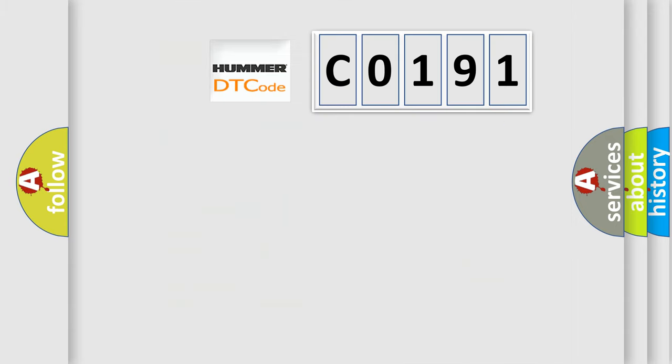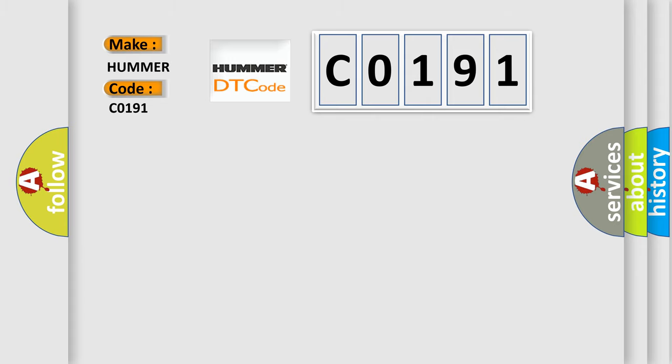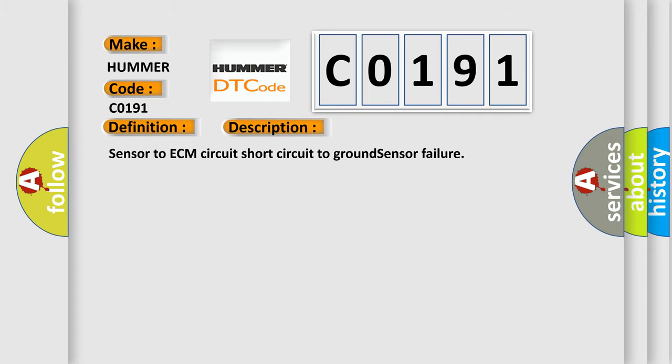So, what does the Diagnostic Trouble Code C0191 interpret specifically for car manufacturers? The basic definition is IAT Sensor Low Voltage High Air Temperature. And now this is a short description of this DTC code: Sensor to ECM Circuit Short Circuit to Ground Sensor Failure. The Airbag Reset website aims to provide information in 52 languages.